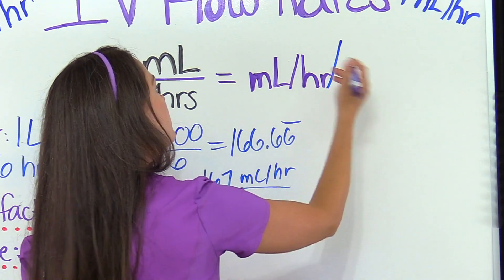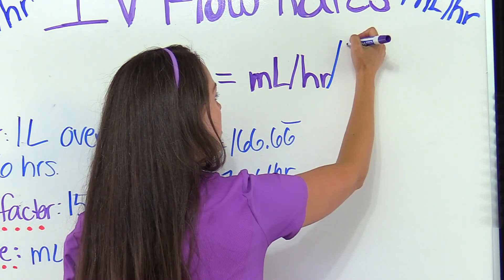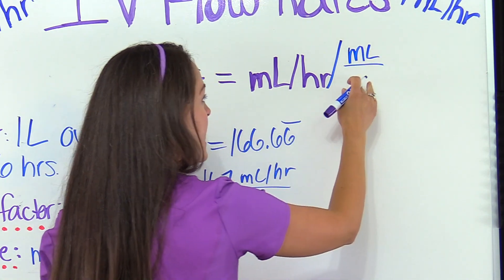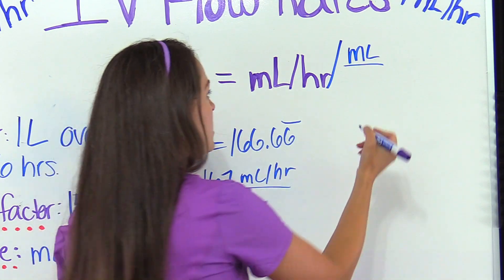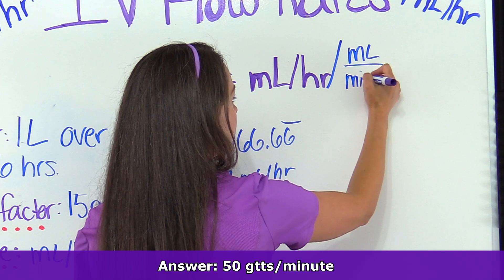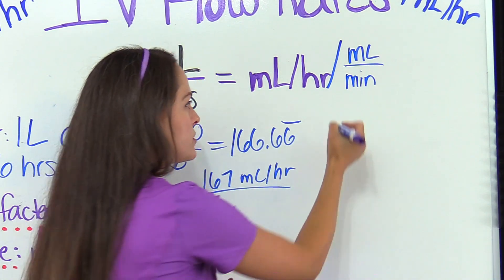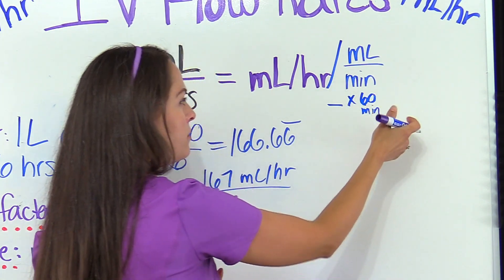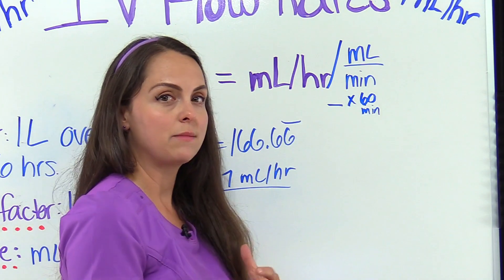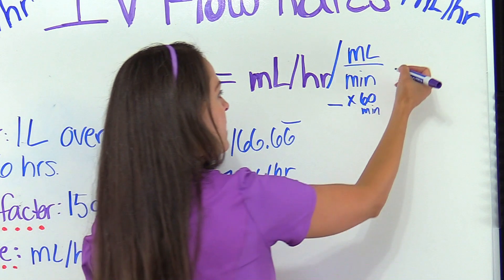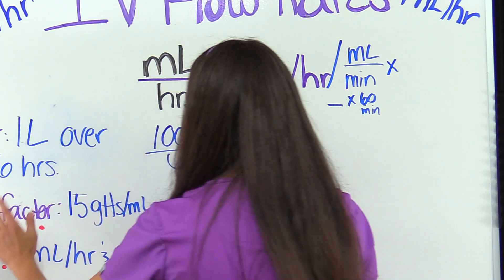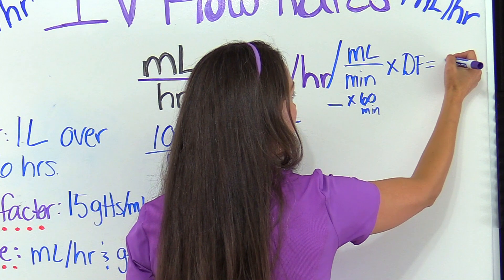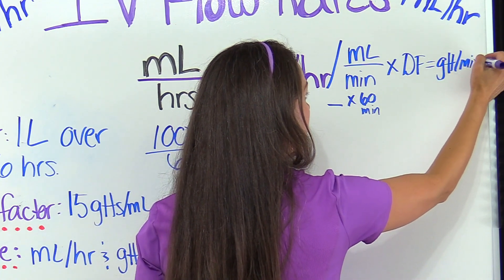The drops-per-minute formula looks like this: take the total volume in milliliters and divide it by the time in minutes. Your problem will usually give time in hours, so you multiply hours by 60 minutes to convert to minutes — because in one hour there are 60 minutes. Then multiply that result by the drop factor, and that equals the drops per minute.